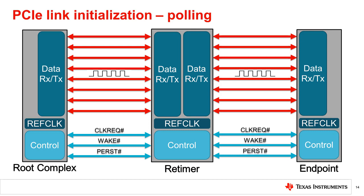In this example, the root complex, the retimer, and the endpoint will all begin transmitting ordered sets of data called training sequences at PCIe Gen1 speeds in order to establish bit and symbol lock. This stage of PCIe link initialization is referred to as the polling state. At the end of this process, each device will be able to interpret received data and respond accordingly. This allows the PCIe connection to begin the link training process and proceed into the configuration stage.